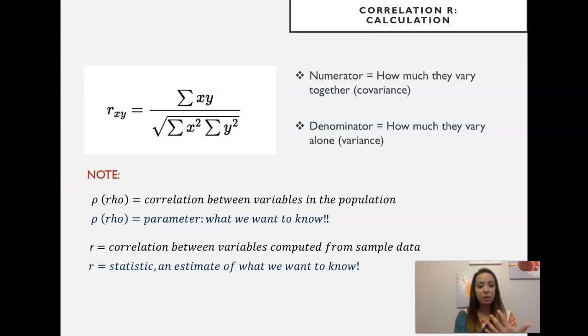We have a Greek letter to represent what we want to know in the population, which is the correlation in the population, the true correlation. But we get data, a sample, from the population, and we can compute the correlation between two variables in that sample, and we'll call that correlation R. So R is a statistic, an estimate of what we want to know.